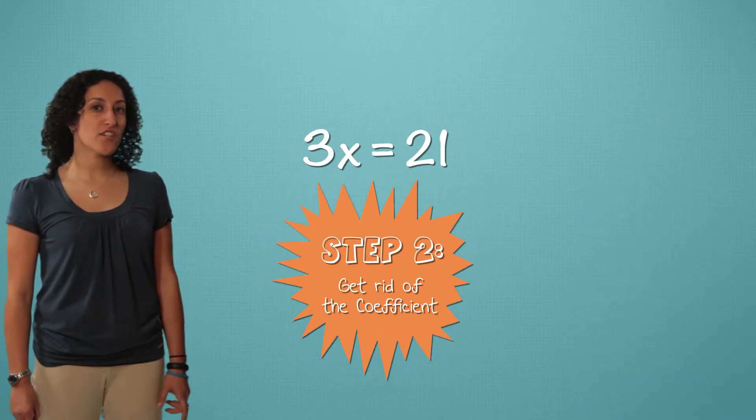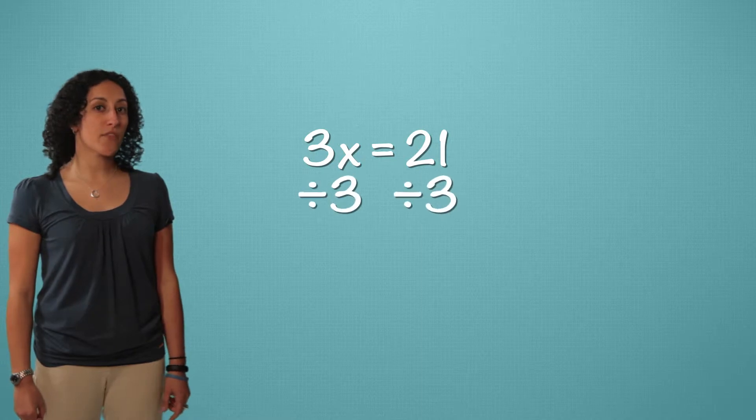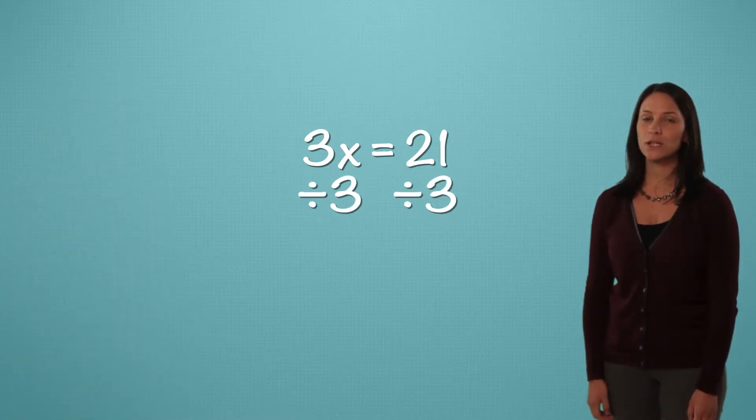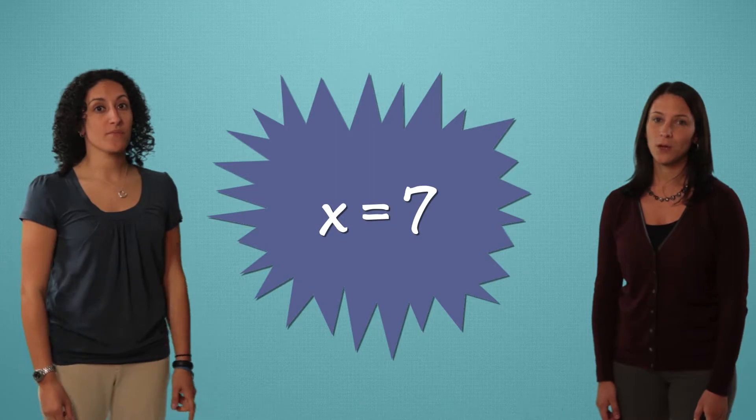Now we clear the coefficient. This is 3 times x, so we will divide by 3. And we're left with 21 divided by 3, which is 7. x equals 7. Great!